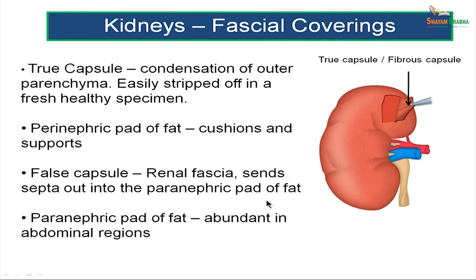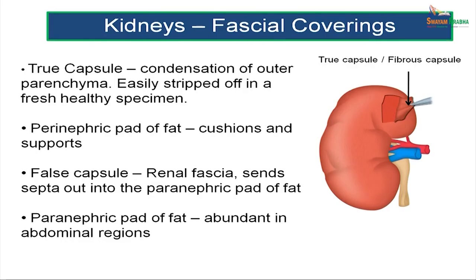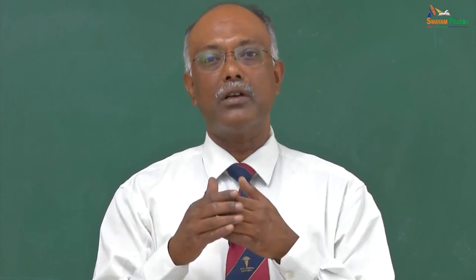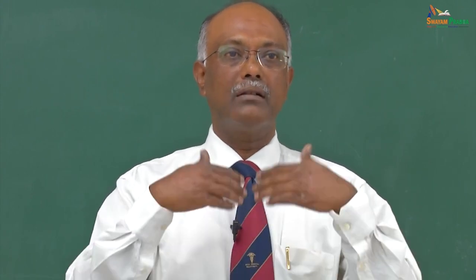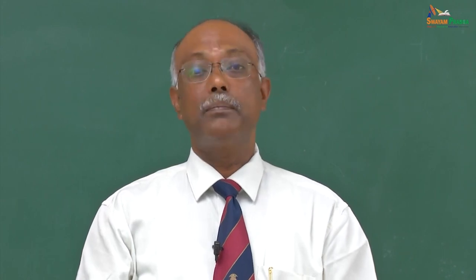Each kidney has two capsules. An inner true capsule, which is a derivative of the condensed portion of the parenchyma of the gland. Outside the true capsule is a layer of fat called the perirenal pad of fat. Outside the perirenal pad of fat is the false capsule, which is derived from the renal fascia. The renal fascia sends septa out into the adjacent layer of fat outside, called the paranephric pad of fat, which is especially abundant in the abdominal regions.